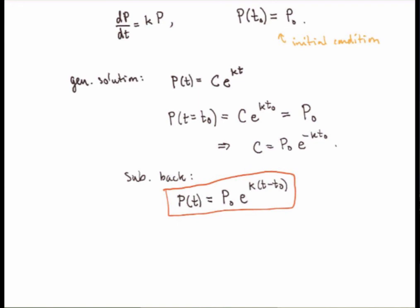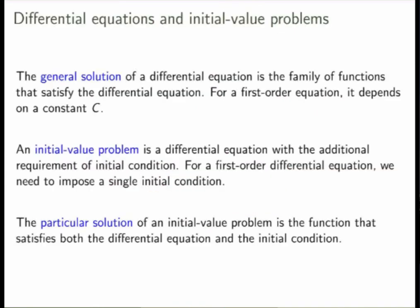Let me summarize the key terms introduced here. The general solution of a differential equation is the family of functions that satisfy it; for a first-order equation, it depends on an arbitrary constant c. An initial value problem is a differential equation paired with an initial condition — for a first-order equation, one initial condition is enough to fix the constant c. The particular solution of an initial value problem is the function that satisfies both the differential equation and the initial condition. The idea is to first find the general solution, then fix c by imposing the initial condition.